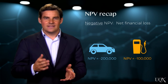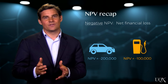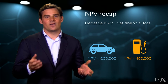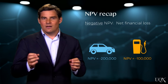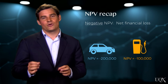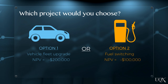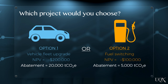Net present value gets us halfway to identifying the lowest cost abatement options. It helps us understand which projects have the highest financial benefits, but it does not tell us about a project's relative greenhouse gas reduction benefits. Let's assume the vehicle fleet upgrade has the potential to reduce the company's carbon footprint by 20,000 tonnes of CO2 equivalent, and the fuel switching project will avoid only 5,000 tonnes. Now which option will you choose?